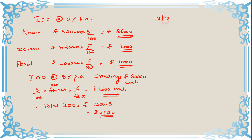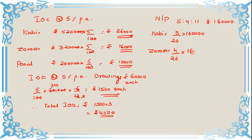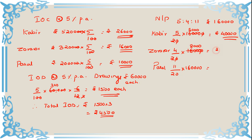Net profit division in the ratio 5:4:11 — the ₹1,60,000 is divided as follows: Kabir gets 5/20 × ₹1,60,000 = ₹40,000; Zorawar gets 4/20 × ₹1,60,000 = ₹32,000; and Paru gets 11/20 × ₹1,60,000 = ₹88,000. Total = ₹1,60,000. This is how the available profit gets divided.